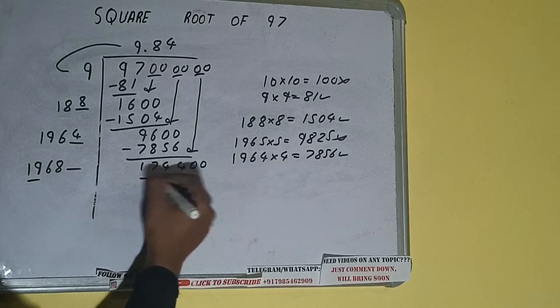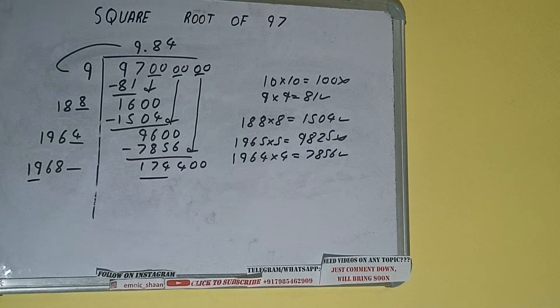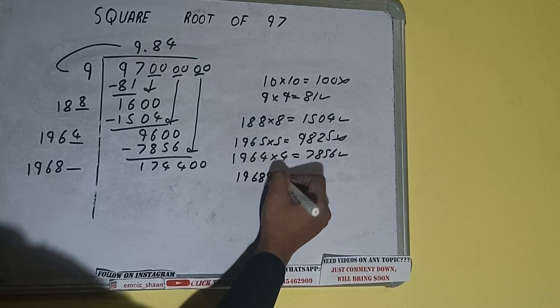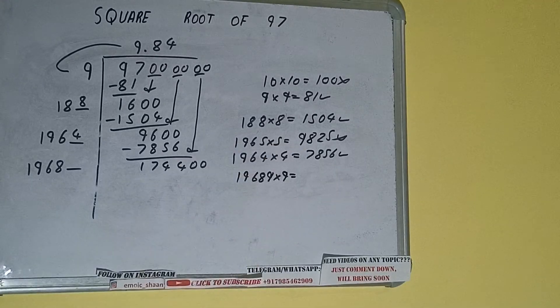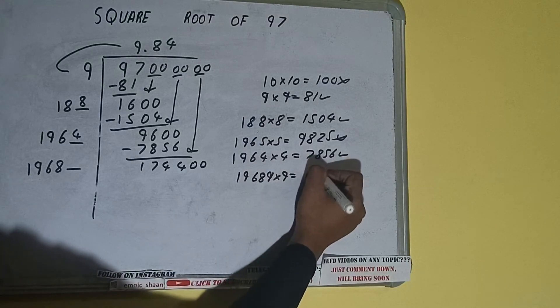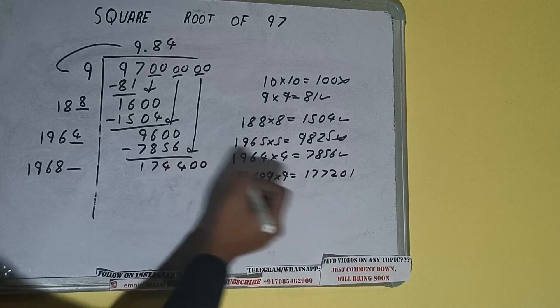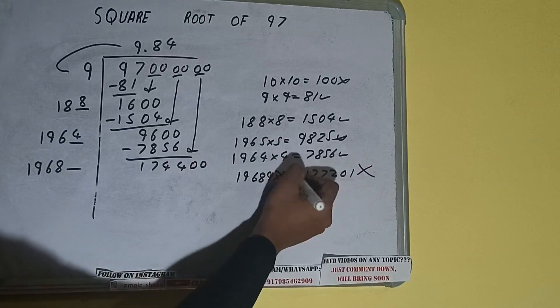Now compare this 19 with this 174. So 19 nine times is 171, so we can try 9 times. 19689 into 9 we can try, and we'll be getting 177,201, which is bigger than this number, so we cannot take 9.